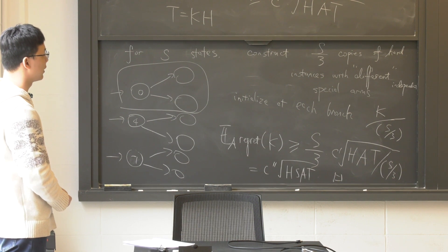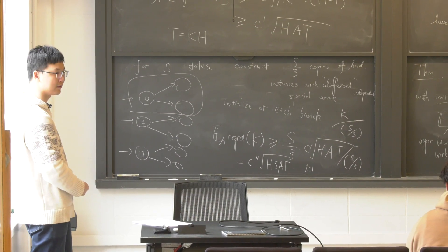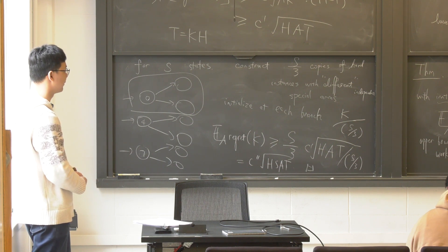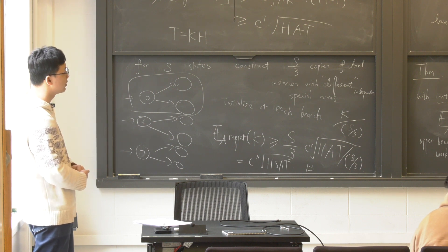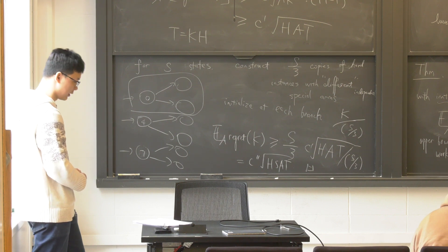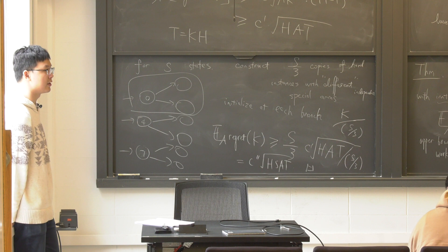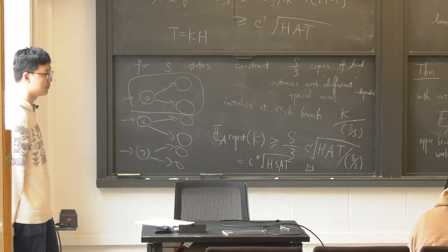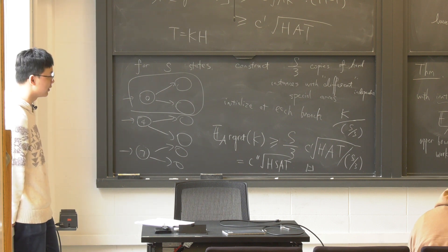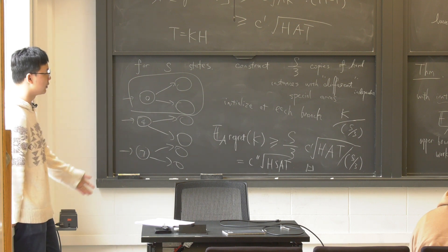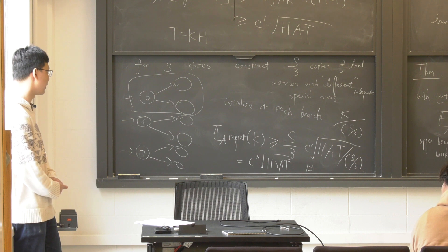The whole idea is we developed this lower bound to match the upper bound — to show the upper bound we developed is sharp, and no algorithm can have better worst-case performance. Starting from the next lecture, we will talk about the offline scenario for tabular MDP, where we no longer have online access or a simulator. Instead, we use data collected by others to reason about the optimal policy, and then we'll move to function approximation in large state spaces.